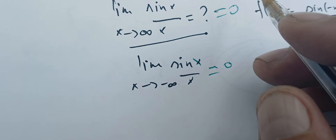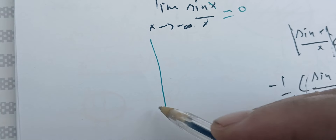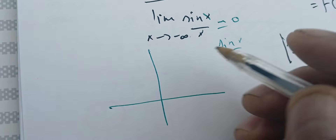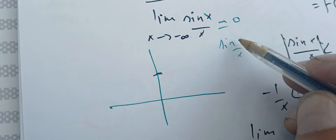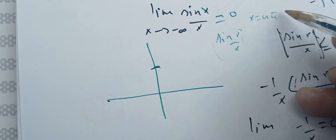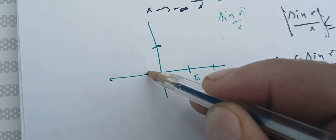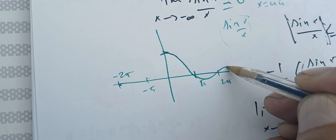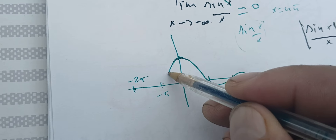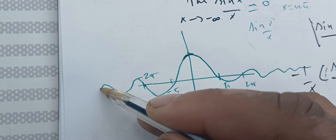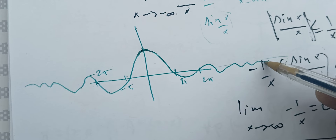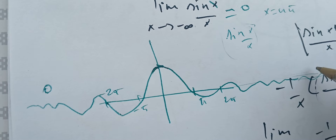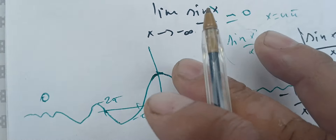This is clearly seen when we graph the function sine of X over X. When X is zero, the limit is one. The function is zero at X equals pi, two pi, minus pi, minus two pi, and so on. The function oscillates and dies out smoothly, and as we get closer to infinity we see the function approaching zero, and the same on the negative side.